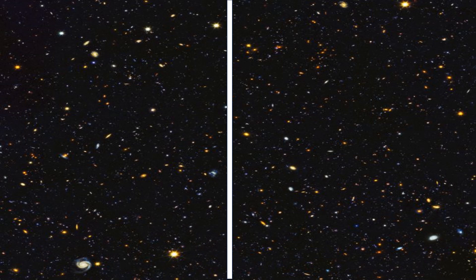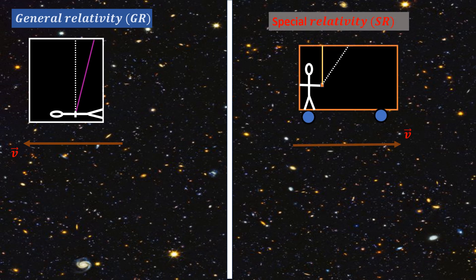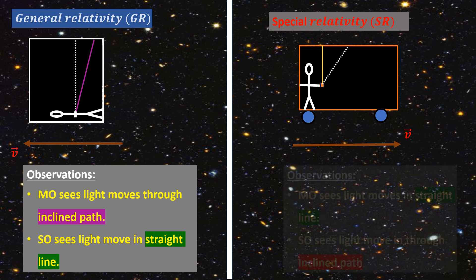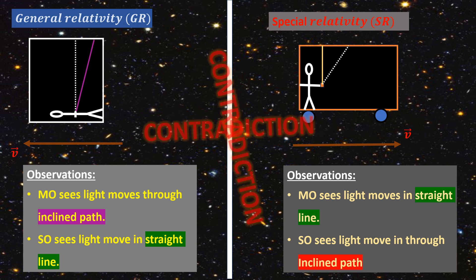According to general relativity, for a frame moving at a constant velocity, an observer in the moving frame sees light go through an inclined path, while a stationary observer sees the light trace a straight line. While for special relativity, a moving observer sees the light go through a straight line, while the stationary observer sees it trace an inclined path. This is clearly a big contradiction between the two theories.